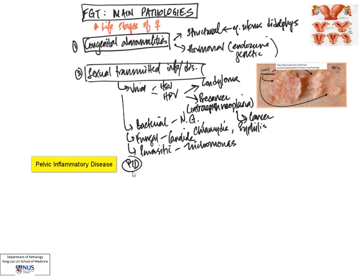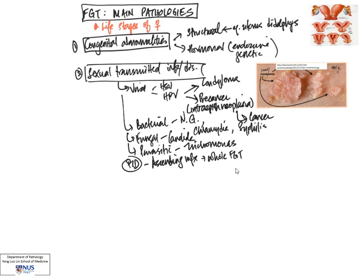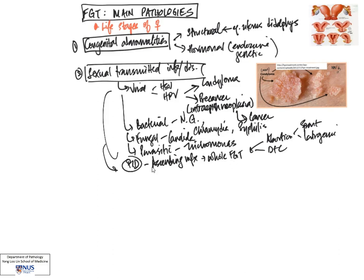Pelvic inflammatory disease refers mostly to ascending infection, which rises from the external genital tract and goes on to involve most or all of the female genital tract. This can be due to abortions, which can be either spontaneous or iatrogenic termination of pregnancies. Sometimes even instrumentation such as dilatation and curettage can give rise to pelvic inflammatory disease, and organisms from this group can sometimes be multiple organisms causing the infection.